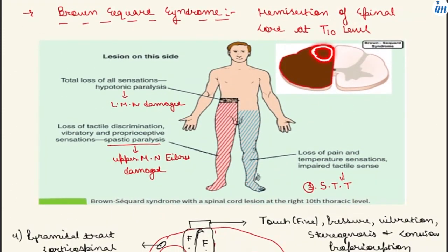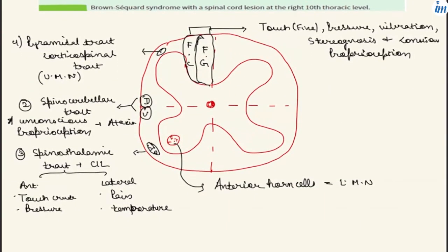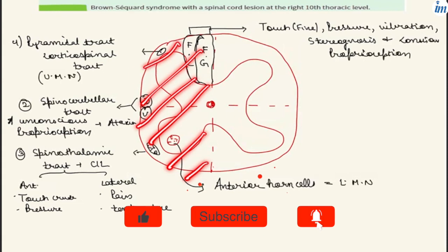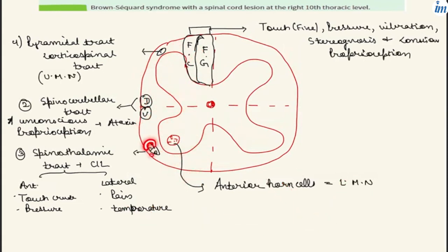In hemitransection of the spinal cord this tract is damaged, so the person will have corresponding manifestations. Another tract is the spinocerebellar tract — the dorsal spinocerebellar tract and the ventral spinocerebellar tract. Cerebellar lesions are always ipsilateral. The main function of this tract is to carry unconscious proprioception, and lesion leads to ataxia. In Brown-Séquard syndrome, all these tracts present on that side will be gone. Another tract is the spinothalamic tract, which brings information from the contralateral side of the body: the anterior spinothalamic tract carries crude touch and pressure, and the lateral spinothalamic tract carries pain and temperature.